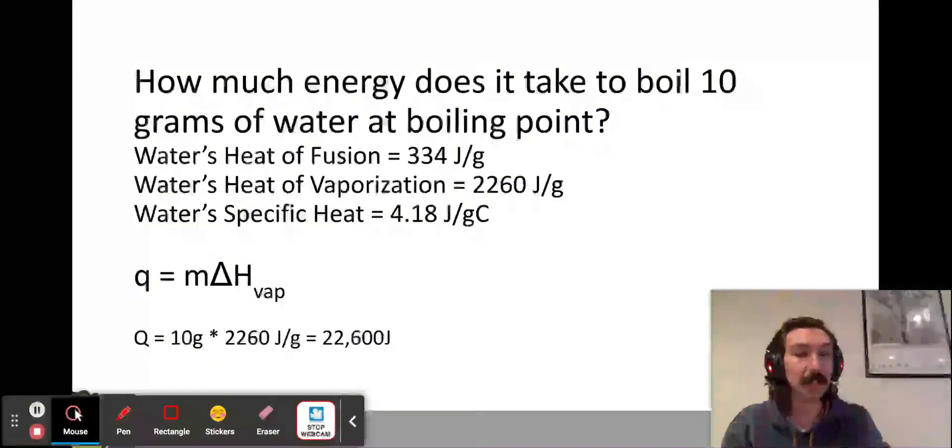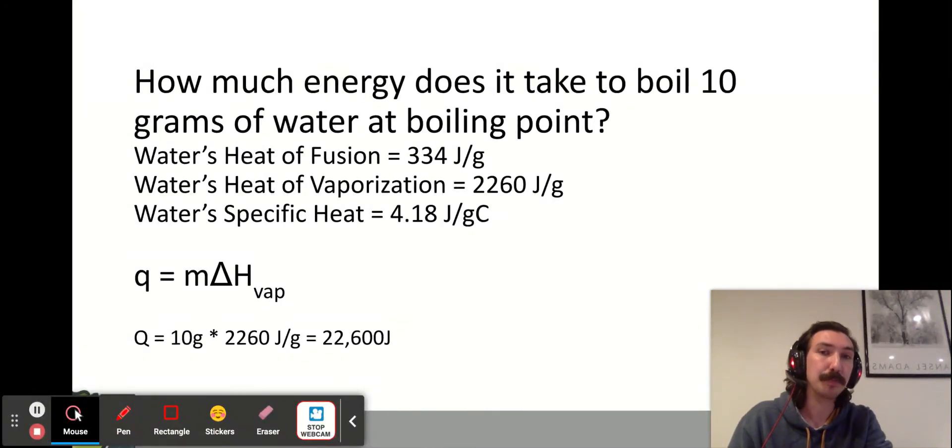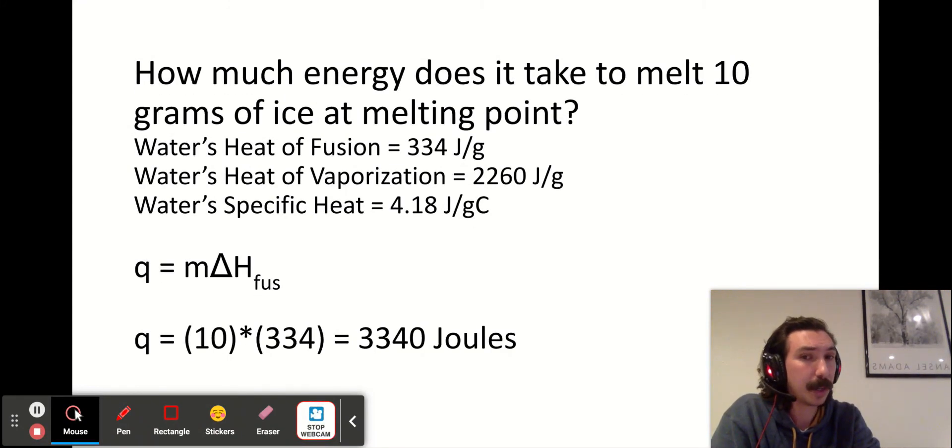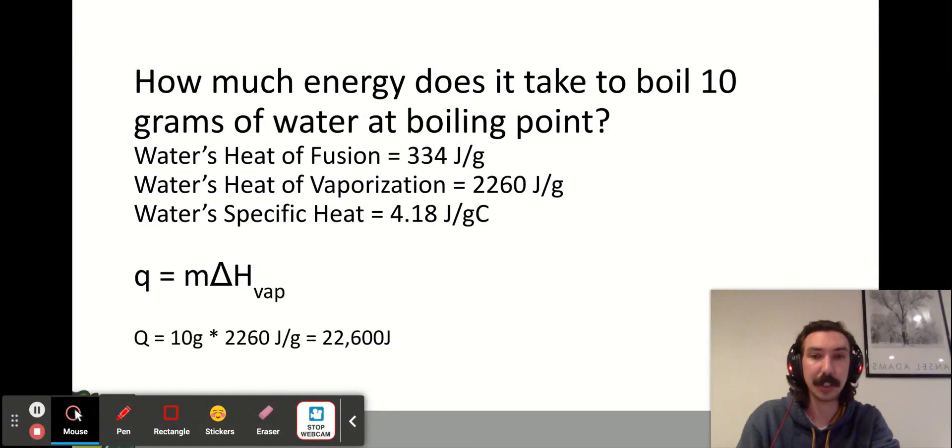One thing I want to point out between these two questions is look at how much more energy it takes to boil 10 grams of water than it takes to melt 10 grams of water. To boil it was 22,600 joules; just to melt 10 grams of water, 3,340 joules. So the enthalpy of vaporization for water is significantly higher—it takes much more energy to vaporize water.